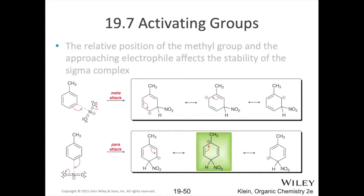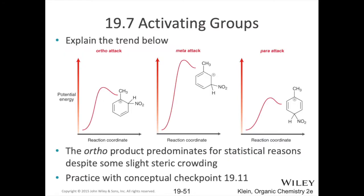What about meta and para positions? If we have our nitronium ion add on at the para position, notice that we also wind up with an intermediate — one of our resonance structures — where that positive formal charge is on the carbon that our alkyl group is attached to. Again, we have that stabilization from hyperconjugation off that alkyl group, pushing electron density toward that carbocation and lowering the potential energy of this sigma complex. Therefore, you're going to need less activation energy to get this reaction going toward that product. But for the meta position, the resonance structures for the nitronium ion adding at meta show that the positive charge on our sigma complex skips over that carbon with the alkyl group. As a result, this is not going to be lower in energy — it's going to be at the same energy as you'd expect for any sigma complex.